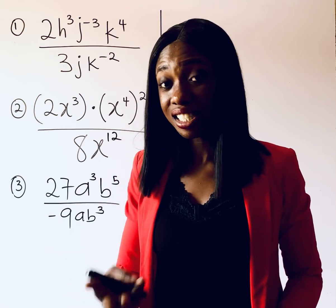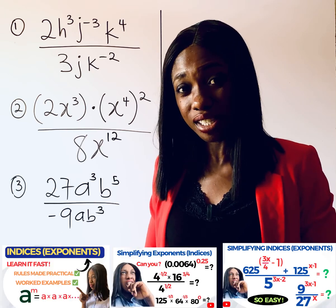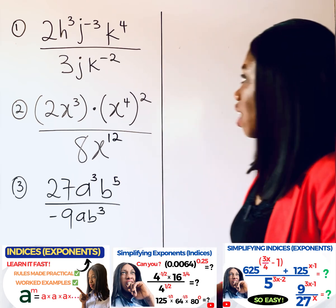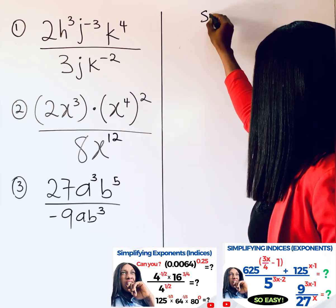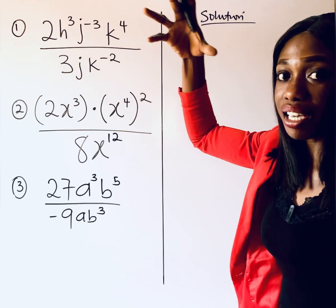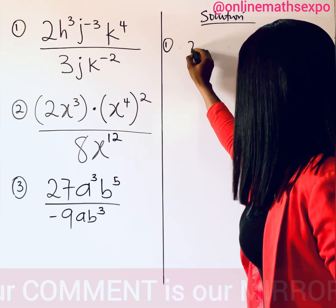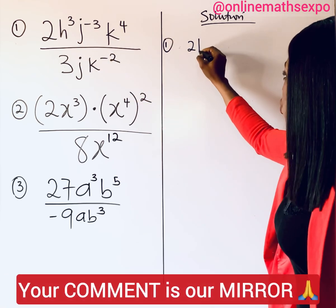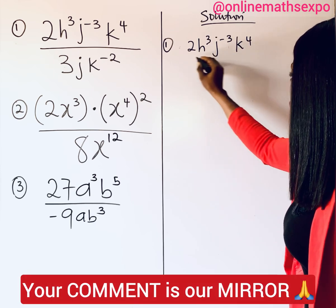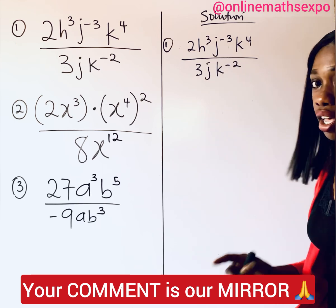This is the fourth class on the concept of exponents — do well to check our previous tutorials as they will help you follow through. Now let's do it together. We can rewrite the first expression as: 2h³ times j to the power of negative 3, times k to the power of 4, over 3j times k to the power of negative 2.